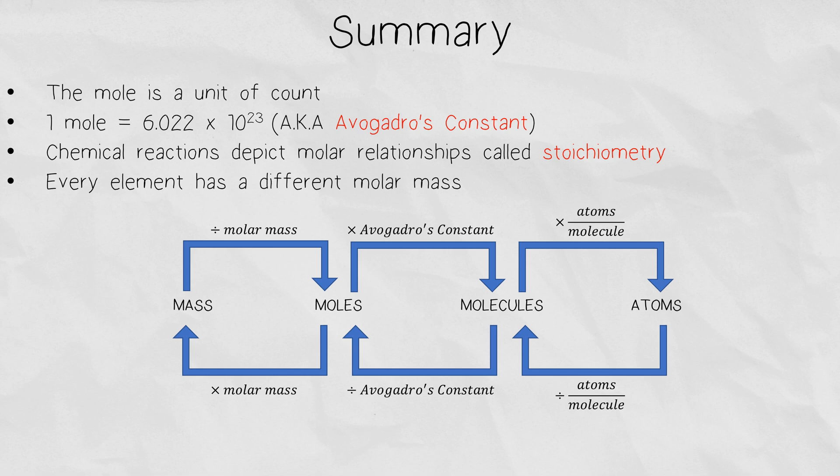This video should have given you a better understanding of the mole, which is an amount unit used by chemists. This unit is extremely important because it is at the core of being able to measure and communicate the amount of chemicals or substances in chemical equations. The term stoichiometry is the molar relationship between chemical reactants and products, and the diagram on screen is a summary of how to convert to and from these different properties.